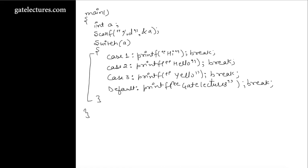In line number 1, I am declaring a as a variable. In line number 2, I am taking some value for a from the user. Let us suppose the user entered some value — initially when we tried to execute this program, the user entered the value 9.